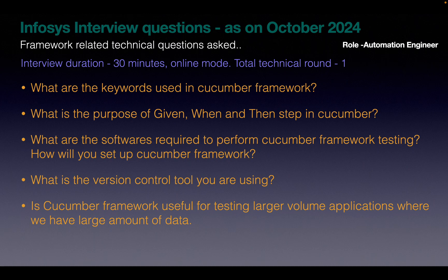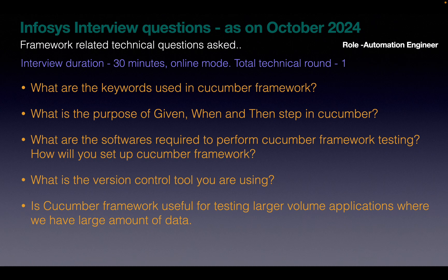The given step usually contains the initial context of the test case. The when step contains the actual test we are going to do — it specifies the action that we are going to test. The then step is used to specify the expected result. The next question is: what are the softwares required to perform Cucumber framework testing? We need Eclipse or any editor, Java, and Maven, and you need to configure all Cucumber-related jar files in your pom.xml if you are using a Maven framework.